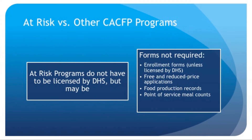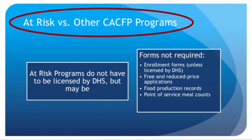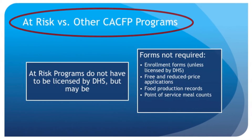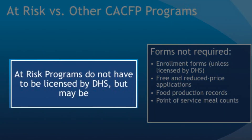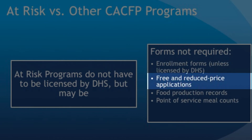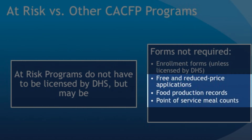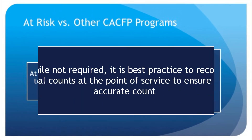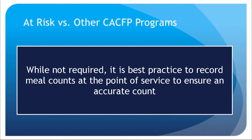There are significant differences between requirements for at-risk programs and most other child care programs. At-risk programs do not have to be licensed by the Department of Human Services, but may be licensed. Enrollment forms are not required unless licensed by DHS. Pre- and reduced-price eligibility applications, food production records, and point of service meal counts are not required. While not required, it is best practice to record meal counts at the point of service to ensure an accurate count.